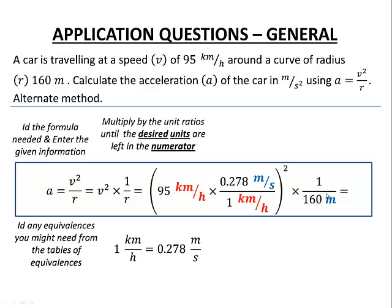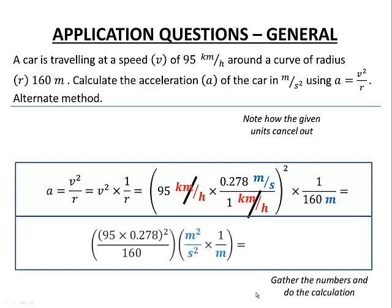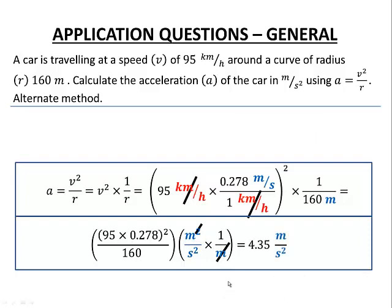Multiplying 95 km/h by the unit ratio 0.278 m/s per km/h performs the unit conversion inside the velocity squared calculation, avoiding the need to handle unit conversions separately on the radius side. The kilometers per hour cancel entirely, leaving meters per second — all squared. Gathering the numbers: (95 × 0.278)² divided by 160. The meter squared per second squared divided by one over meters gives meters per second squared, and the final answer is again 4.35 meters per second squared.